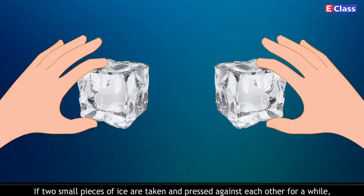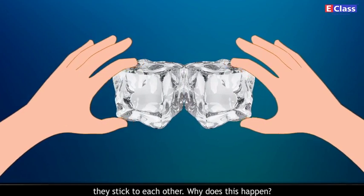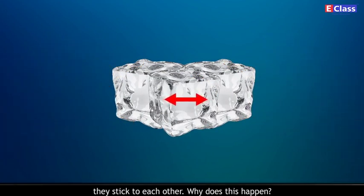How does the shredded ice convert into solid ice ball? If two small pieces of ice are taken and pressed against each other for a while, they stick to each other. Why does this happen?